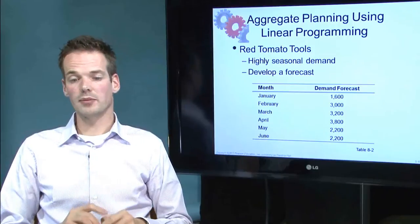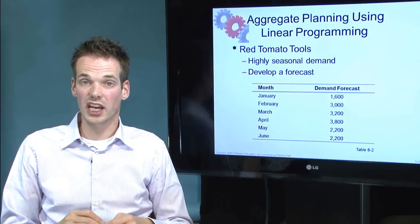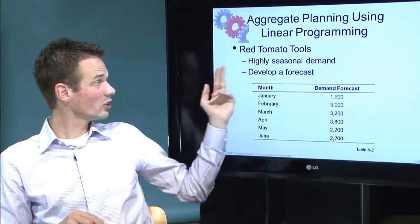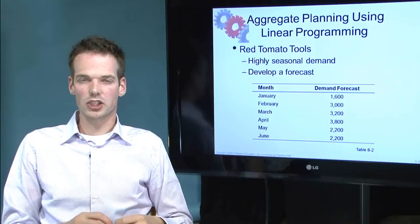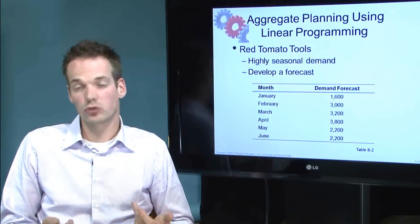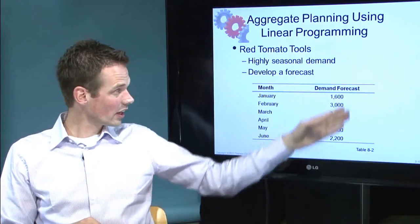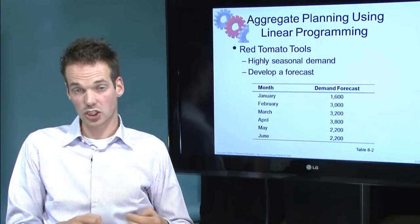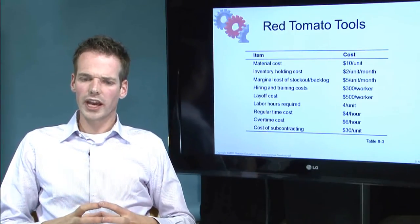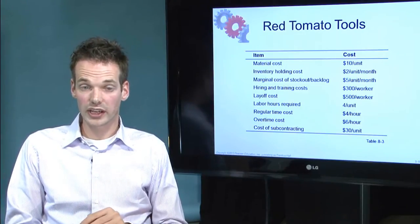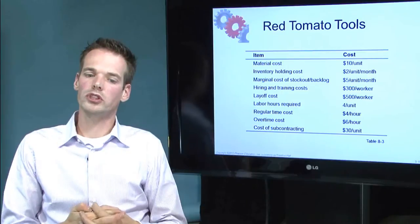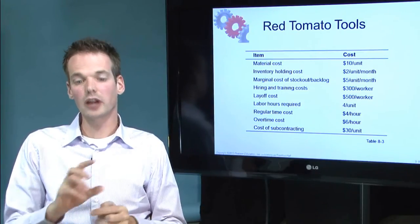We use linear programming to solve the aggregate planning problem. In this example we use Red Tomato Tools, which has a highly seasonal demand, and we developed a forecast — please refer to chapter 7 on how to develop a forecast. As mentioned in the first video about chapter 8, you need information on nine points: material cost, holding cost, stockout and/or backlog cost, hiring cost, layoff cost, hours required per unit, regular time cost, overtime cost, and the cost of subcontracting.